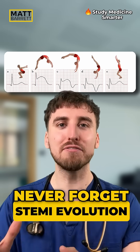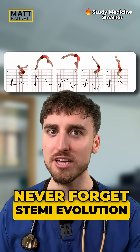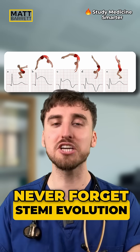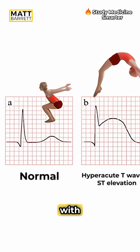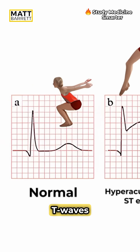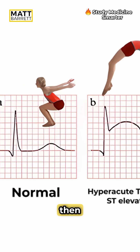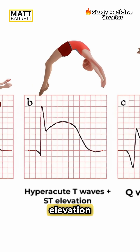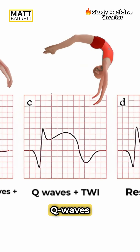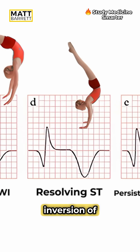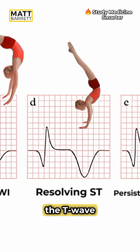Never forget how a STEMI evolves on an ECG by just remembering someone doing a backflip. It starts out with hyperacute T waves, then the ST elevation kicks in, then the Q waves start developing, followed by inversion of the T wave.